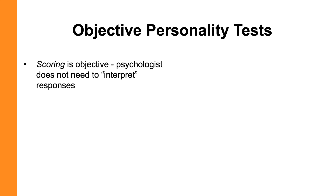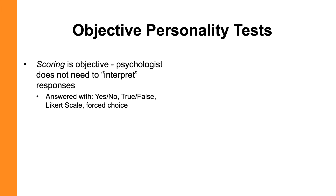What makes the test objective? Why the word objective? I've heard two different arguments. The first is that the scoring is objective. The way you score someone's responses on an objective personality test doesn't involve interpreting them or doing qualitative analysis. You simply add up the number of yes/no, true/false, or Likert-type items measuring the personality characteristics you're interested in and get a numerical score. Usually those scores are normed so you have a sense of how that person's score compares to the general population.